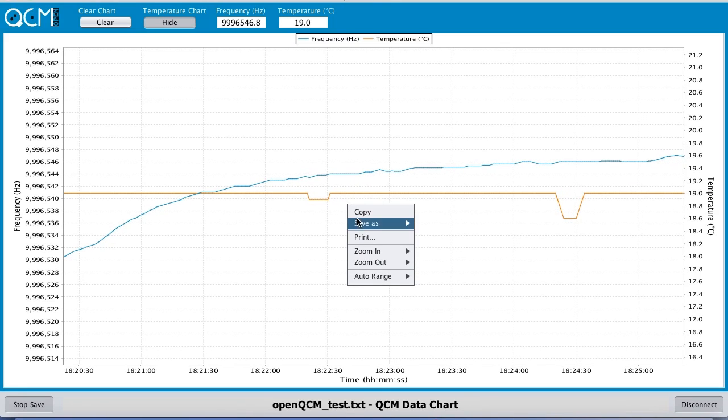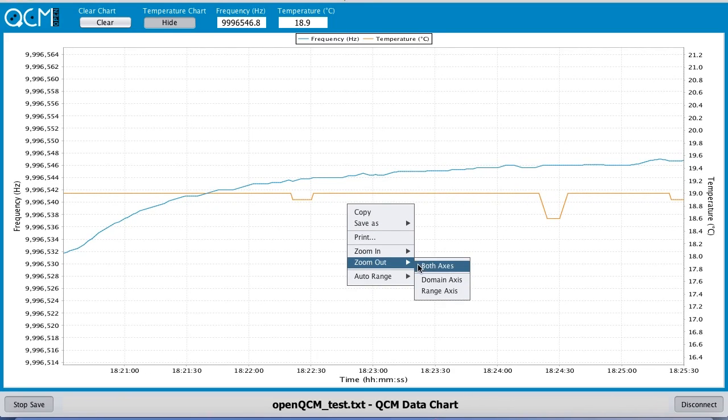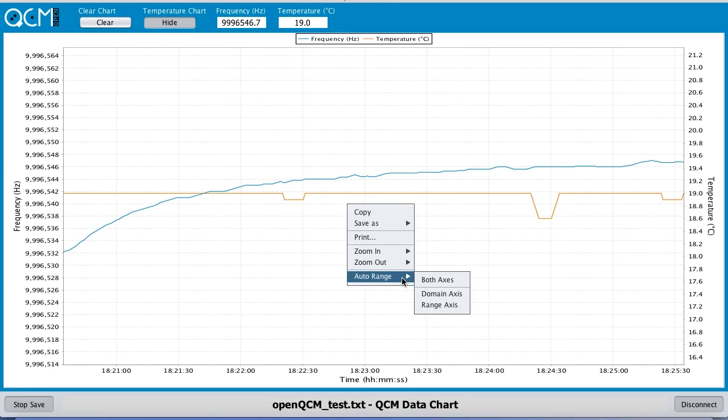Right click on the chart. The chart is interactive and provides several features such as save image, zoom in and out, and auto range axis.